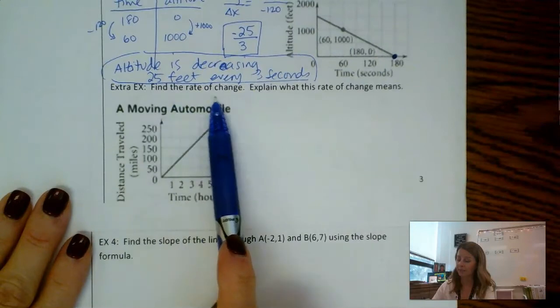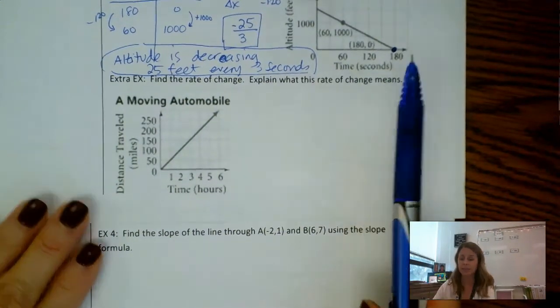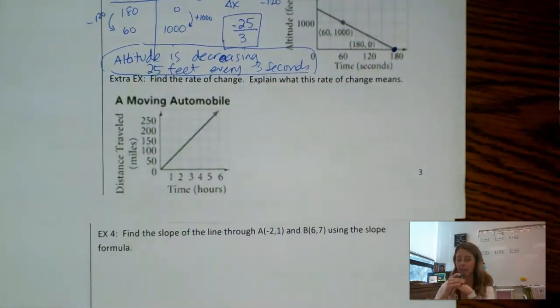Now if we wanted to do a more unit rate, if I turn that into a back to a decimal, we could say the altitude is decreasing eight and a third feet every second. So we could go one further step but I wanted to link it back in with this rate of change. Okay, I'd like you guys to do this extra example here. Pause the video. Same idea. Find the rate of change. Explain what it means. And then when you come back to the video I will walk through the answers with you.